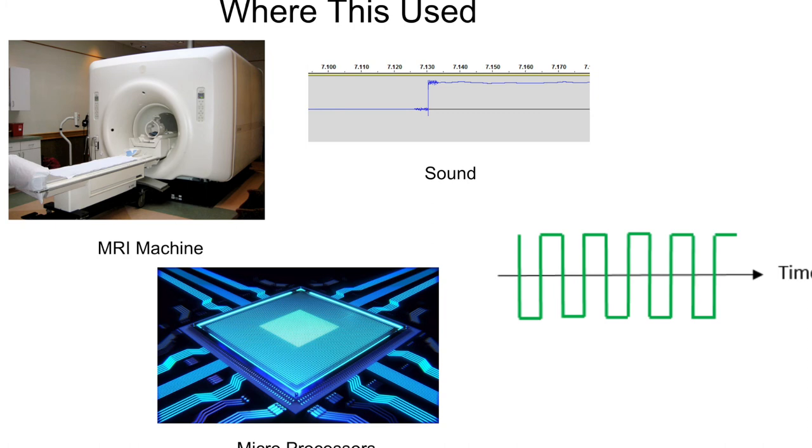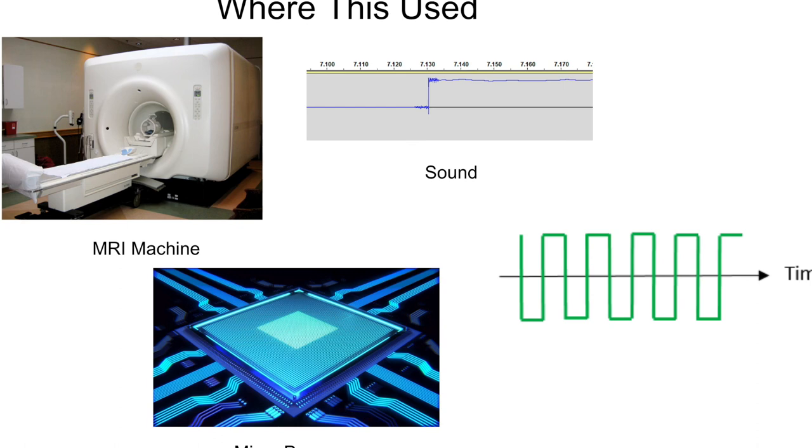Due to the nature of square waves, if the frequency is consistent and allows for the waves to oscillate at a consistent rate, they can be used as clocks. This can be seen in microprocessors today acting as clock generators.